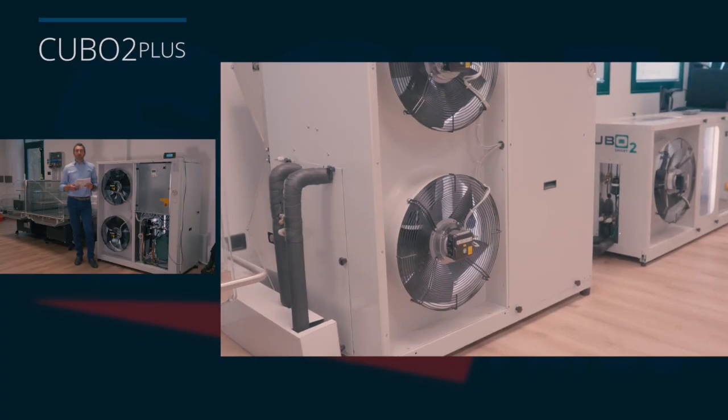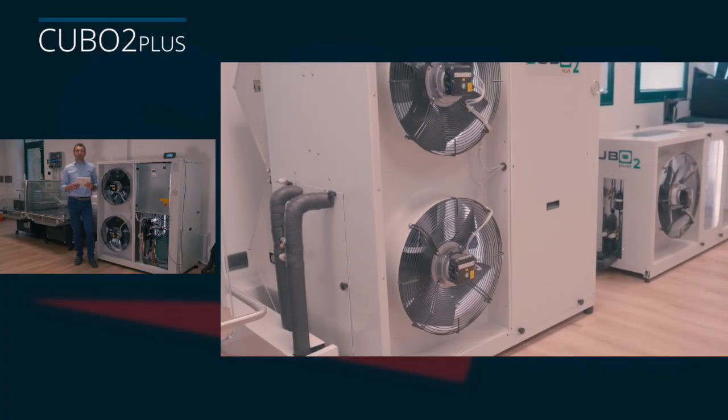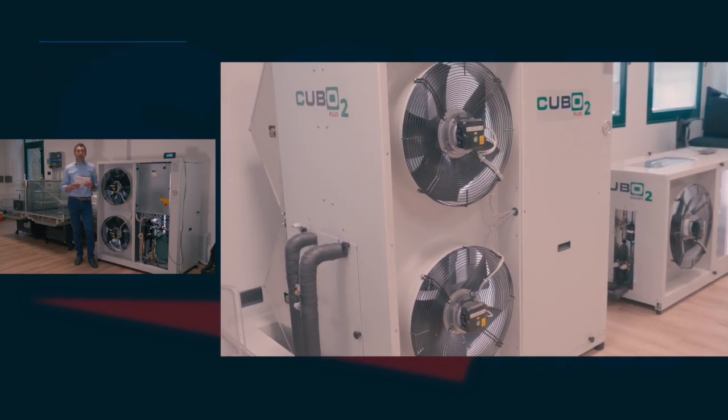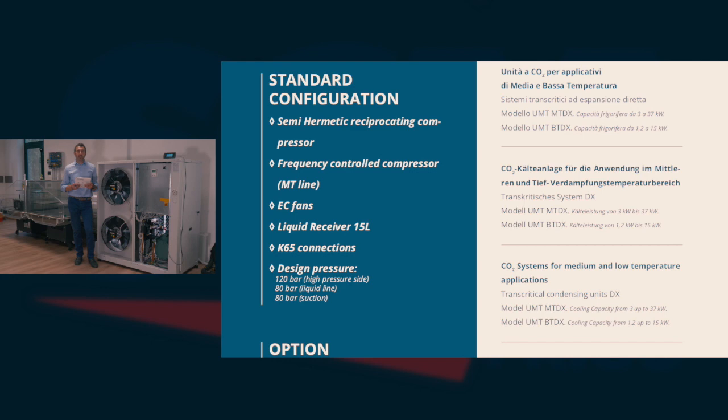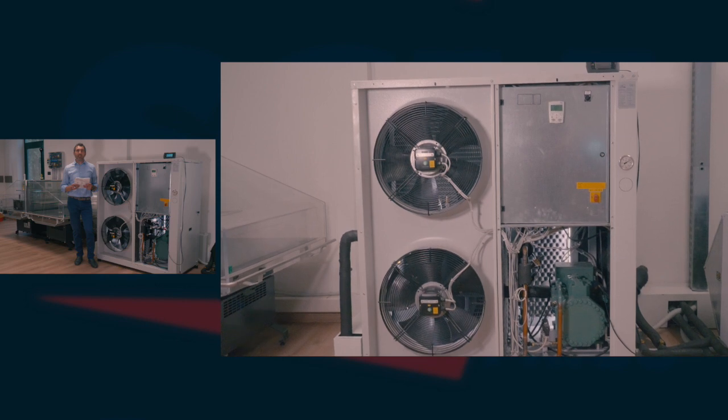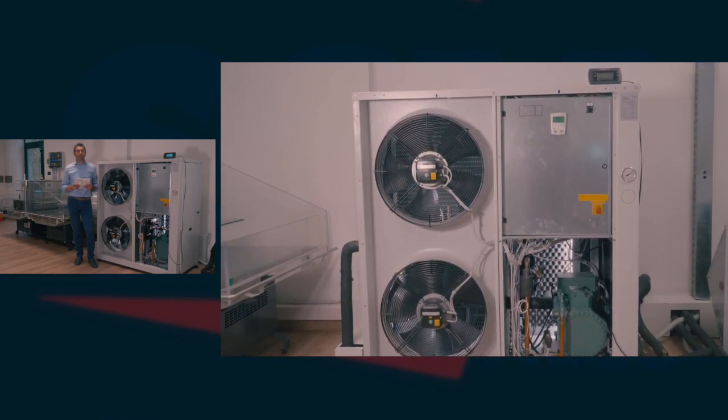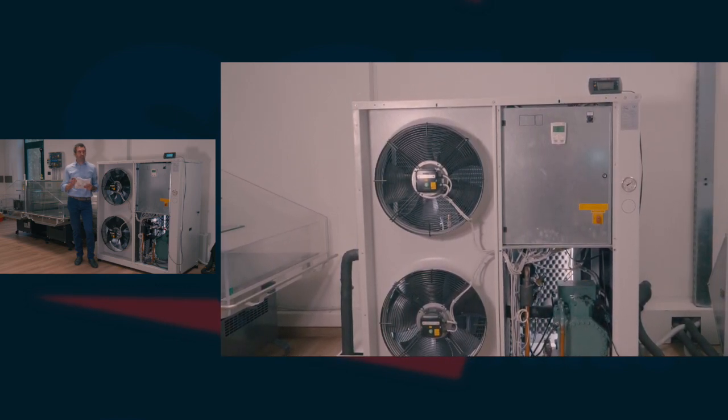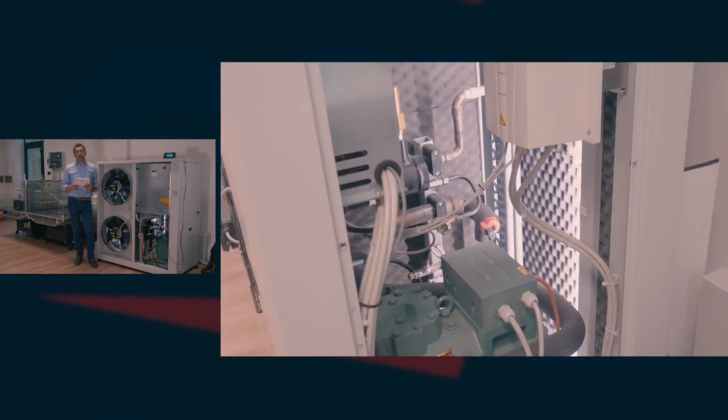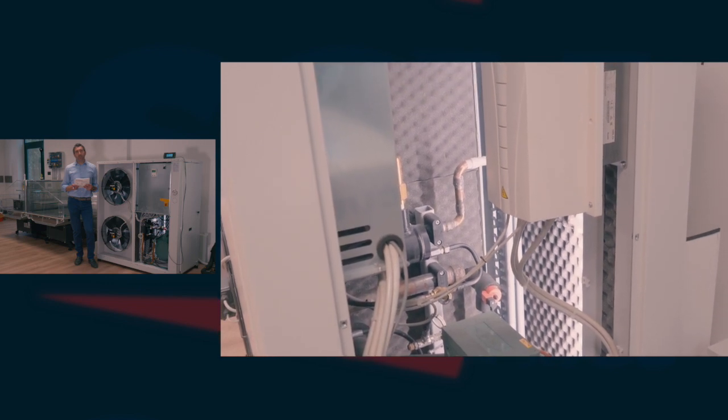This is a medium temperature condensing unit Qubo2 Plus. This condensing unit supplies 9 kW at an evaporation temperature of minus 8 degrees Celsius, and a room temperature of 35 degrees Celsius. This unit is connected to a medium temperature evaporator located in the medium temperature control room, which is managed by an MPX Pro control with stepper expansion valve.